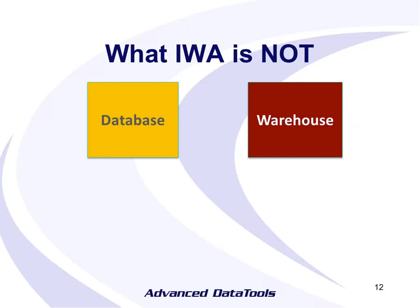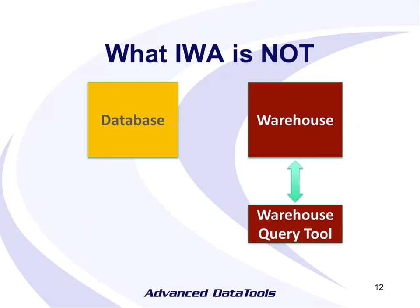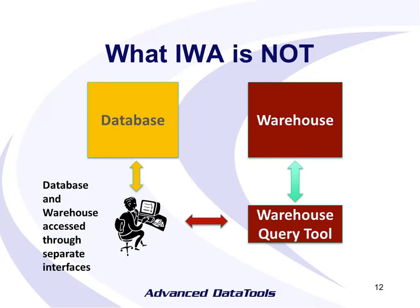This differs from some other products where you've got a very separate warehouse using different technology. You use an ETL process to take elements of your database and store them in the warehouse, and you use a separate warehouse query tool to get to the data. Your applications or BI tools have to decide: am I querying the database, or do I use this whole different set of tools? The Informix accelerator means you don't need that separation. If you use DB access now, you can continue to use DB access — no changes.